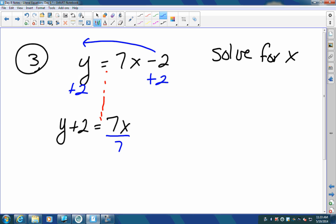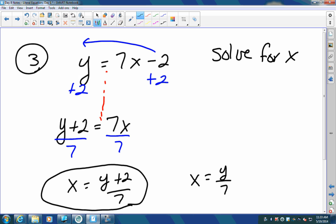I get Y plus two equals seven X. Then you need to divide by seven to get X by itself. So you're going to get X equals Y plus two divided by seven. You also could have written it as X equals Y divided by seven plus two over seven, but no big deal. Either way is okay.